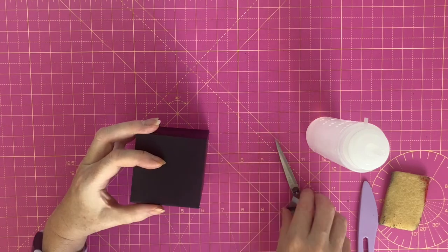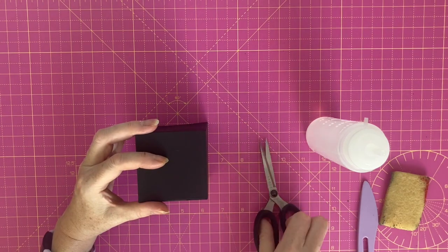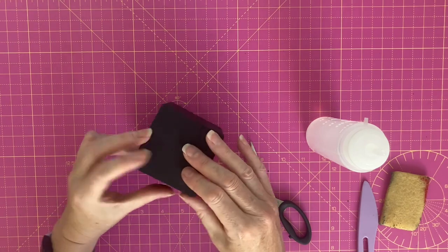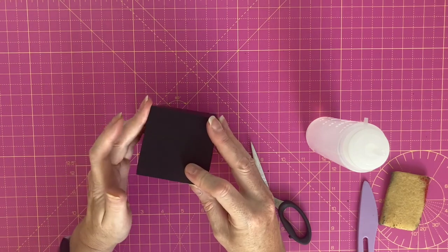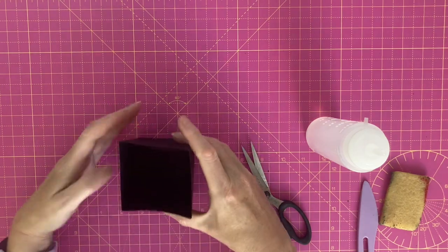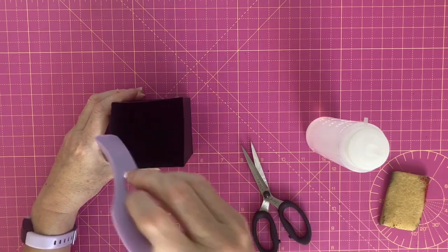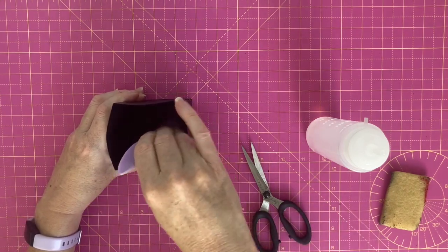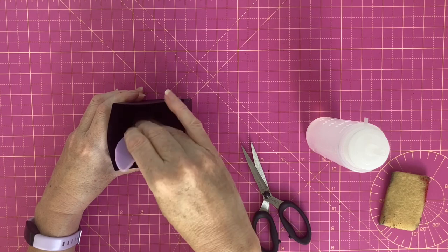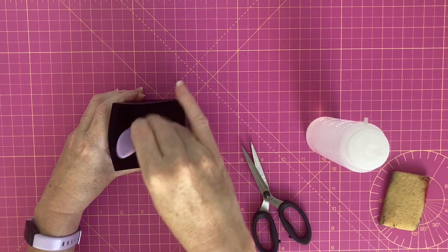If there are any slight overhangs I can cut those once it's dry. I'm going to flip the box over and just go in with my score tool.